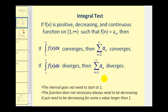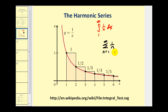We're not going to prove this test here, but here's the idea. If we consider the harmonic series and the function y equals one over x, the integral test states that if we can determine the area under the function and above the x-axis on the interval from one to infinity, then this infinite series will be convergent. And if this improper integral is divergent, then so is the infinite series.